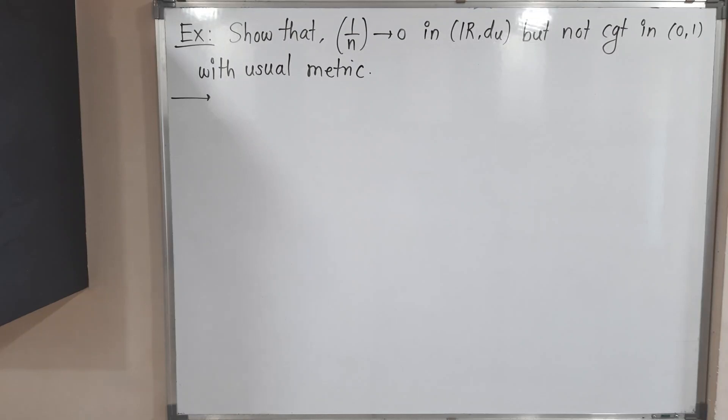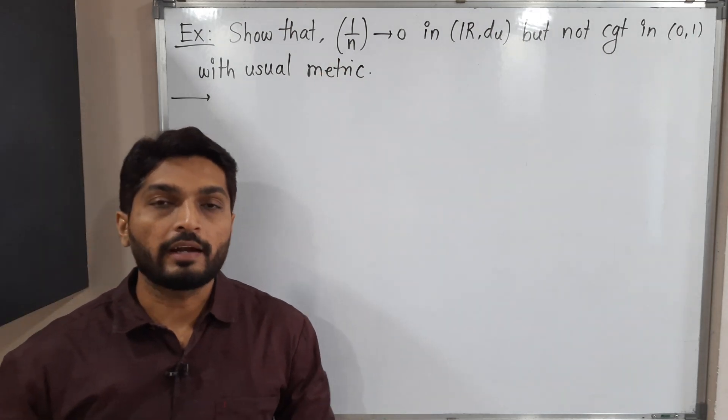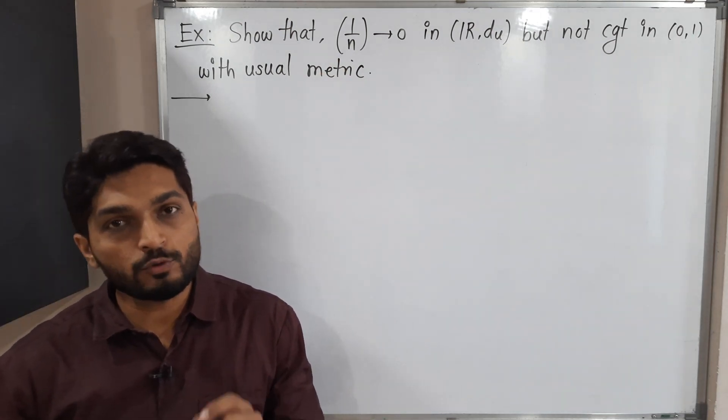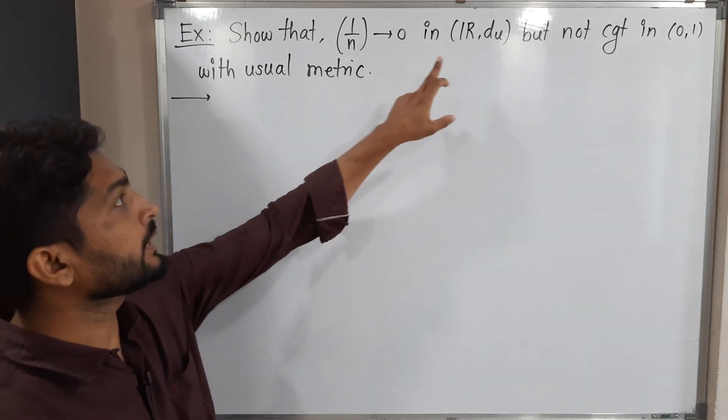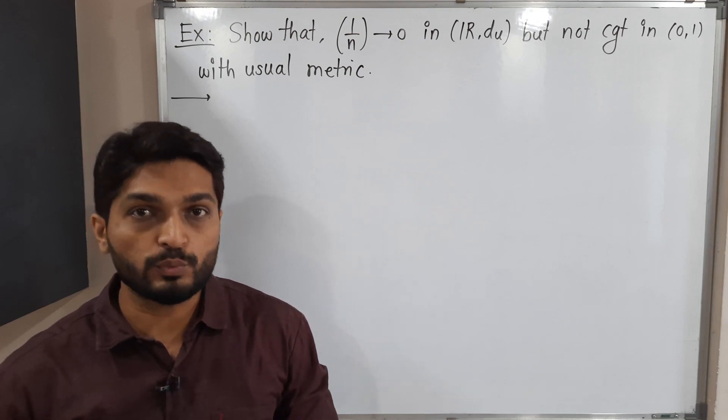Hi everyone, in this video we are going to discuss this example. So we have this very simple sequence 1 by n and we have to prove that that sequence converges to 0 in R with the usual metric D_u, where D of x,y equals mod x minus y.